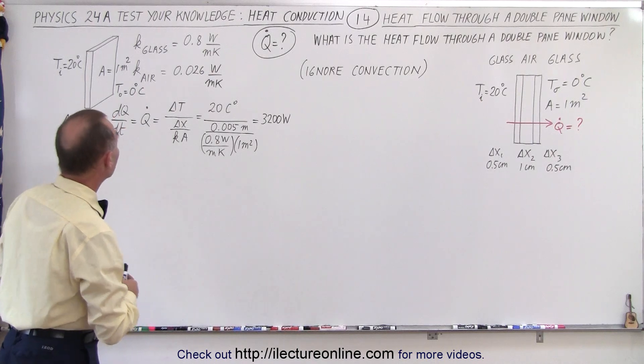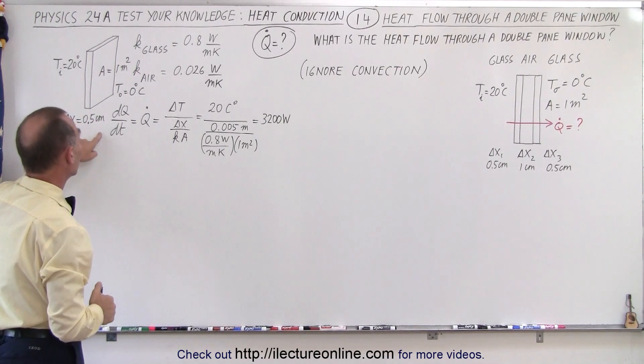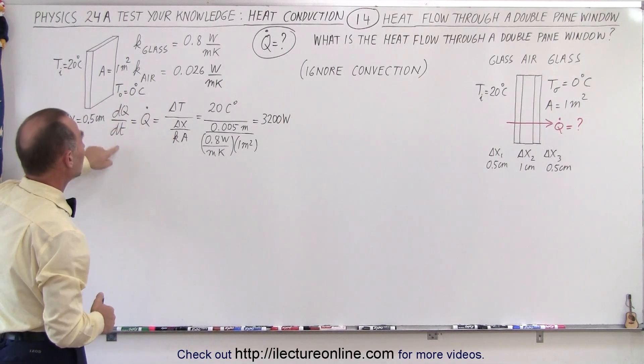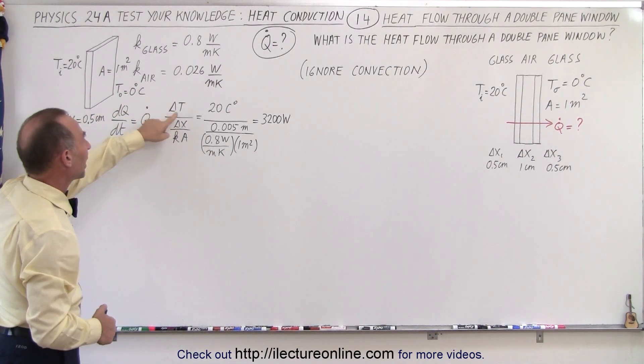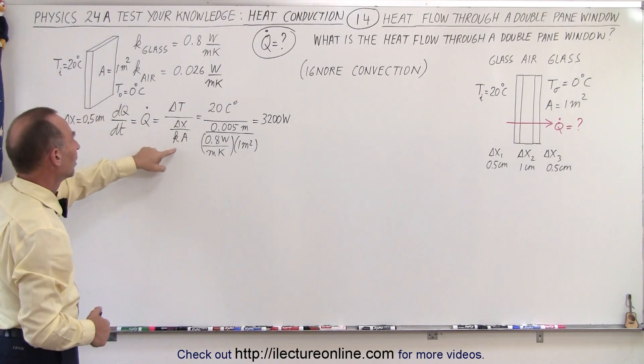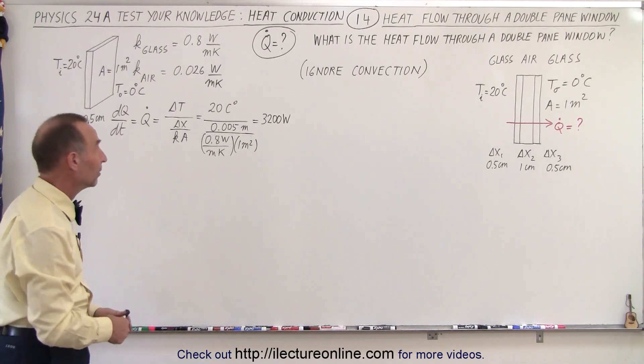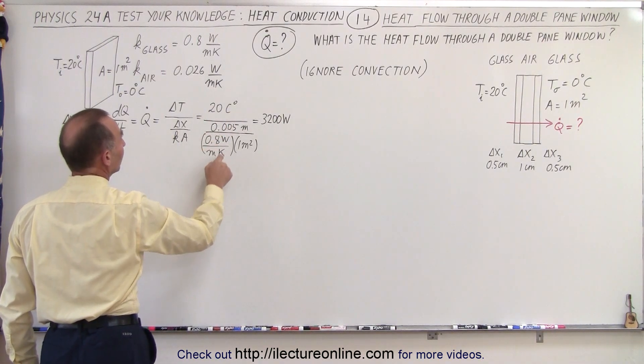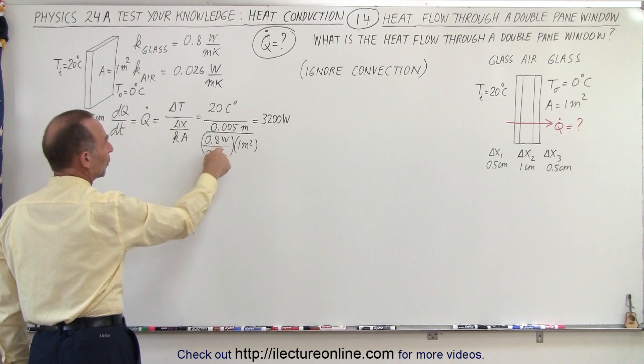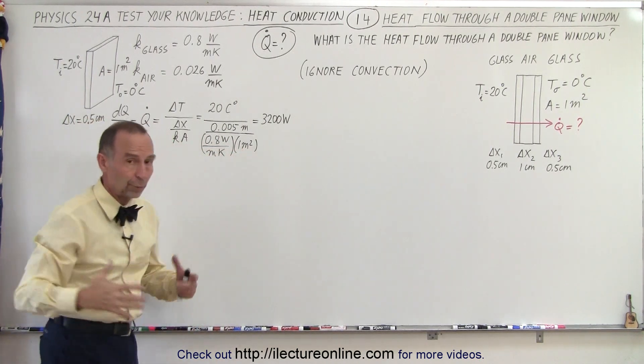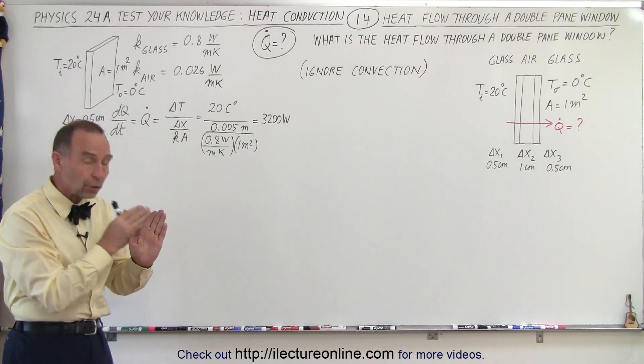Here for comparison, we calculated the heat flow across a single pane window, which means a single pane of glass. And so we use the equation that Q̇ = dQ/dt is equal to the difference in the temperature between the inside and the outside, divided by the heat resistance, which is the thickness of the layer divided by the heat conductivity constant and the cross-sectional area. In this case, the difference in temperature is 20 centigrade degrees. The thickness of the glass is a half a centimeter converted to meters. The k is 0.8 watts per meter per kelvin, and the cross-sectional area, we took it as a square meter. And it turned out it's 3200 watts of heat across that window pane.